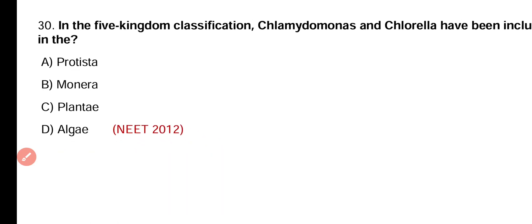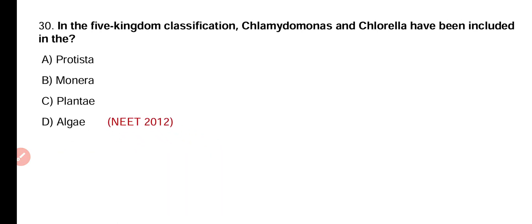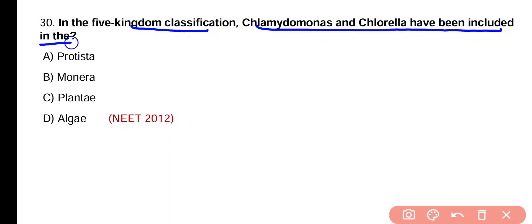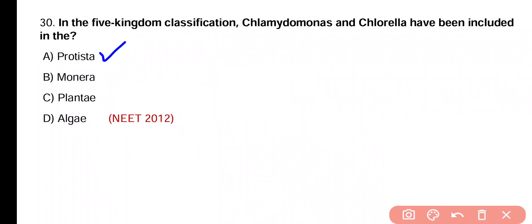Question 30. In the five-kingdom classification system, Chlamydomonas and Chlorella have been included in: Protista, Monera, Plantae, or Algae. Correct answer is option A — according to the five-kingdom classification system, Chlamydomonas and Chlorella belong to kingdom Protista.